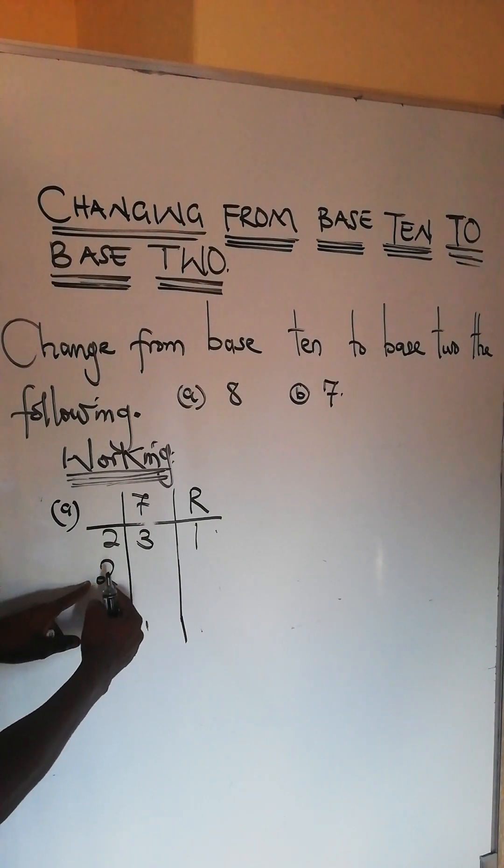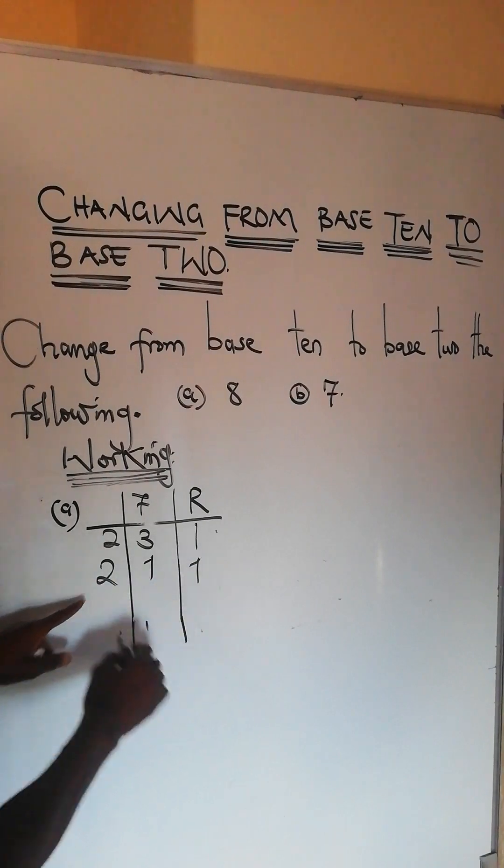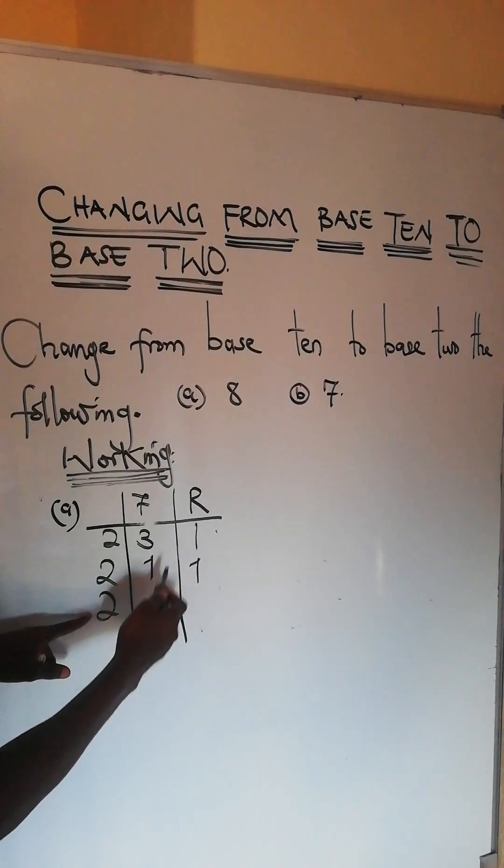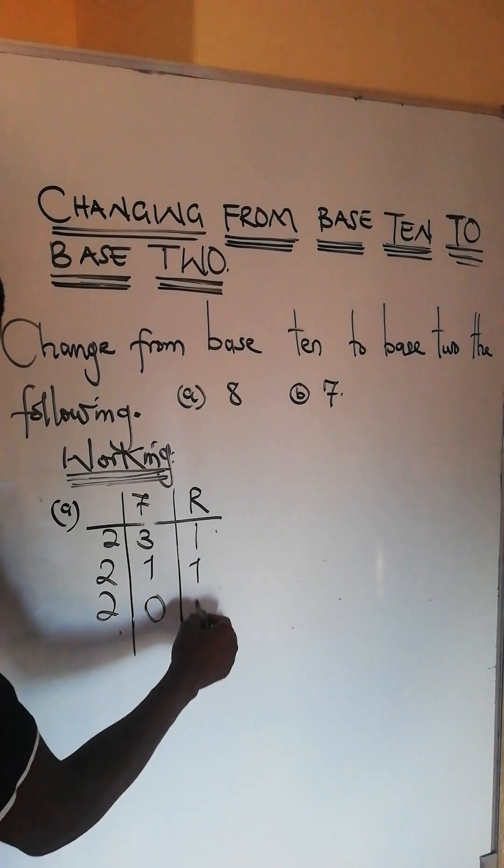Then you have 3 divided by 2. 2 can divide 3 once and leave a remainder of 1. Then 1 divided by 2, you will have 0 there and the remainder is 1.